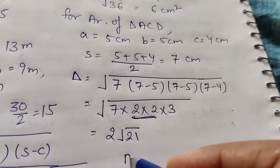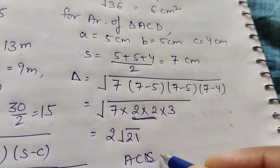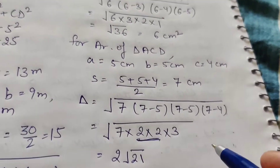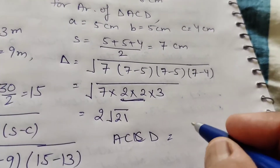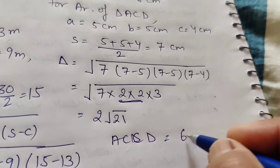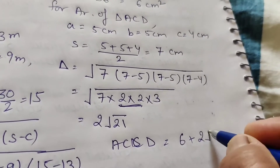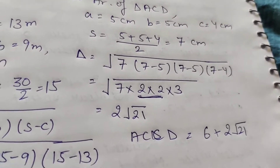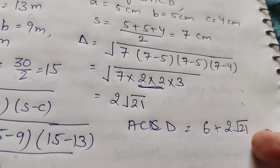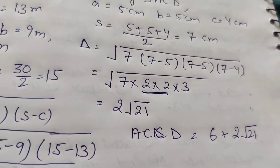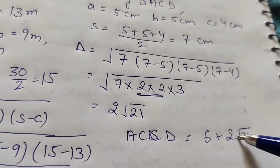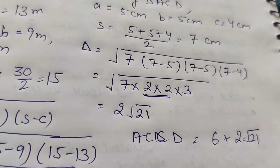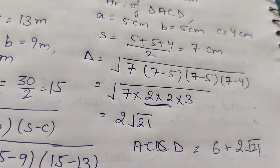The area of quadrilateral ABCD equals 6 plus 2 root 21. Root 21 is approximately 4 point something; multiply it by 2 and add 6 to get the final answer.